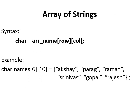Strings can also be represented using a two-dimensional array. The syntax is char array_name[rows][columns]. For example, char names[6][10] means it can have 6 rows, and each row can hold up to 10 characters. I have initialized it with values like Akshay, Parag, and Rahman — each row consisting of a maximum of 10 characters.